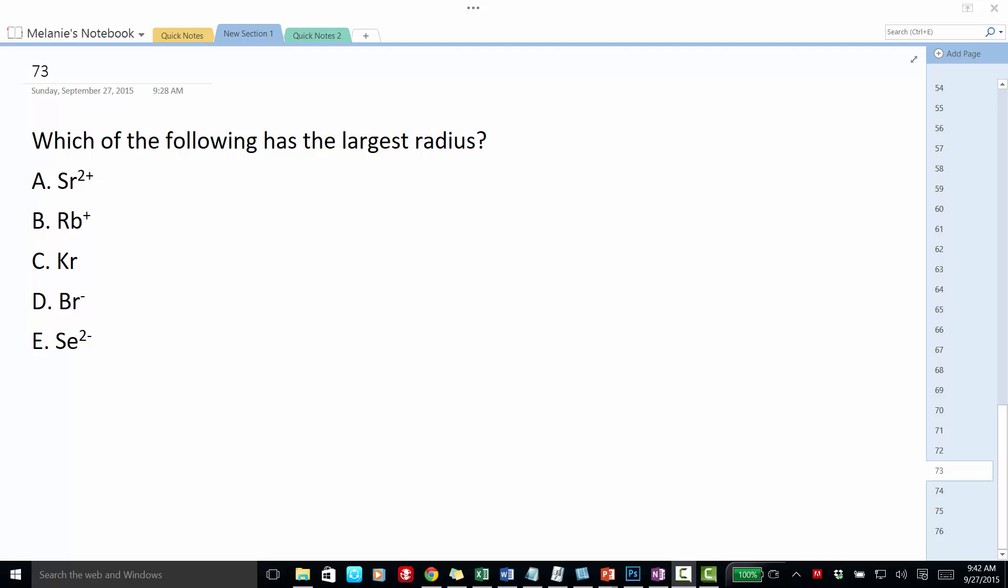So we have the strontium ion, the rubidium ion, krypton atom, because it doesn't have a charge, it's a neutral atom, the bromide ion, and the selenide ion.